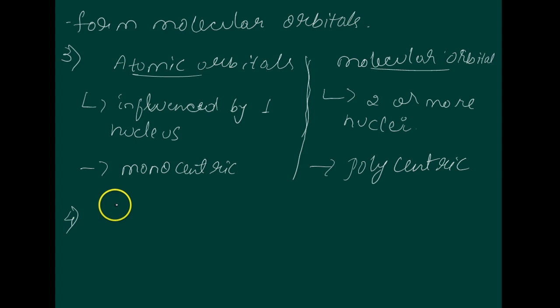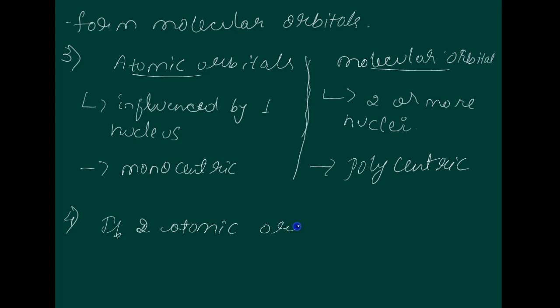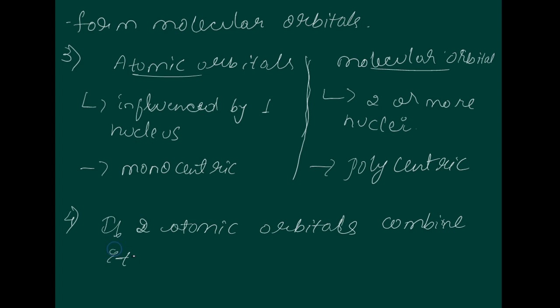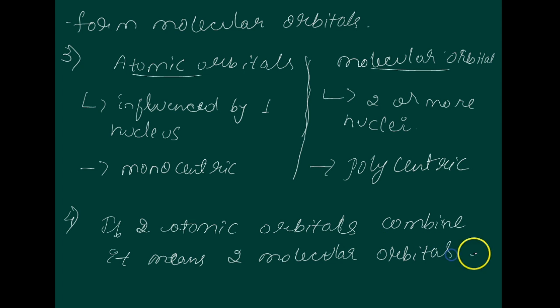Fourth feature: the number of molecular orbitals formed is equal to the number of combining atomic orbitals. When two atomic orbitals combine, two molecular orbitals are formed — one known as the bonding molecular orbital and one as the antibonding molecular orbital.